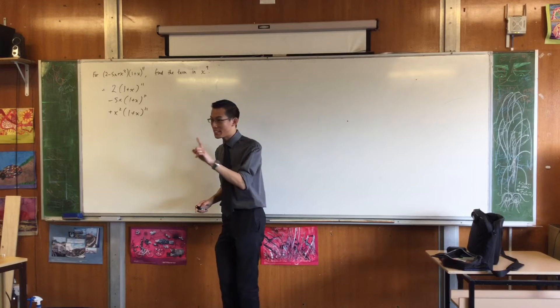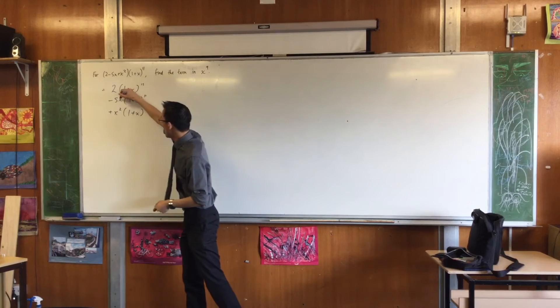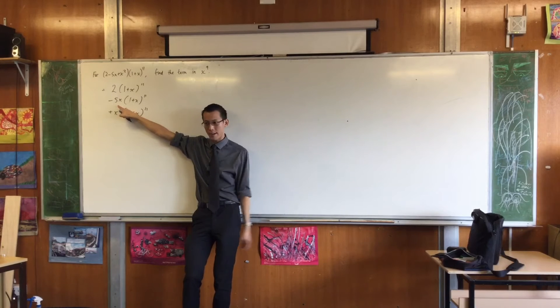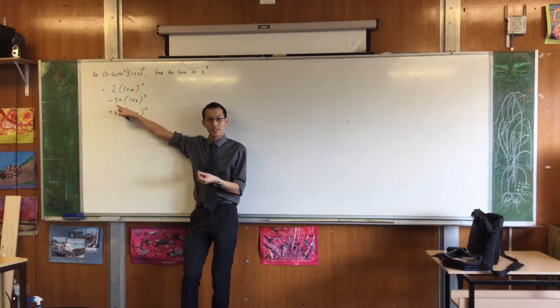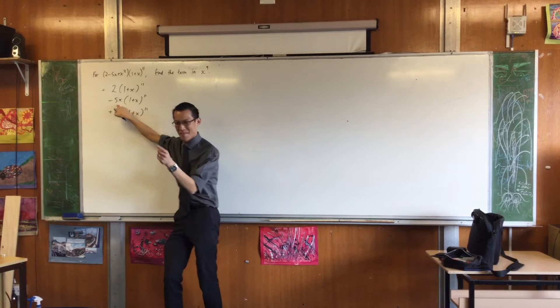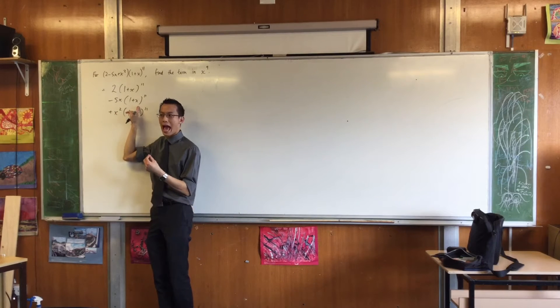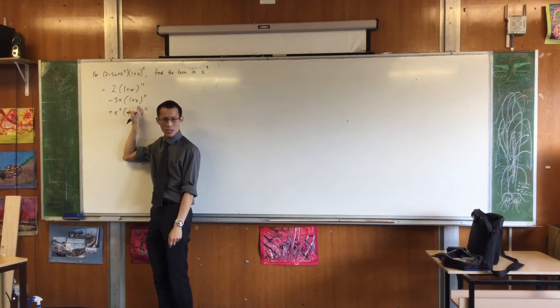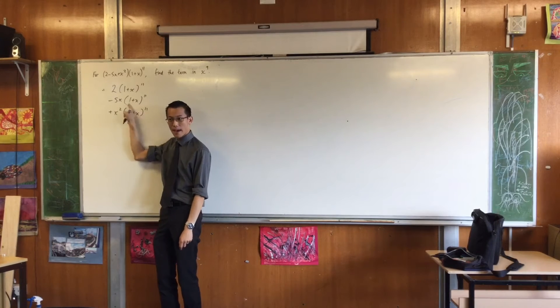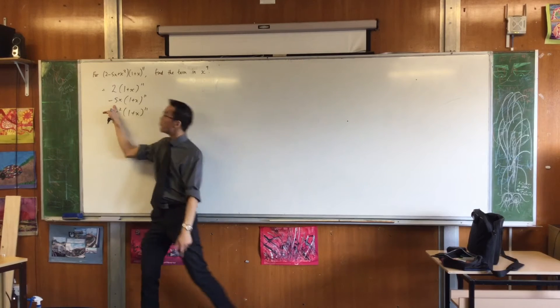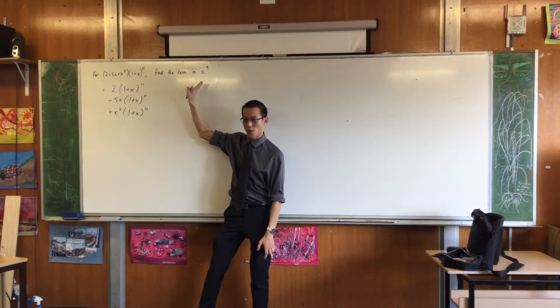The reason why it's not x to the power of 9 is because it gets multiplied by x when I expand all my brackets out. So it will actually become an x to the 10. Therefore, the term I really want in here is the x to the 8 term. Do you agree? Because once I get an x to the 8 term out of here, it will get expanded with this, and it will become part of the x to the 9. Are you following with me?